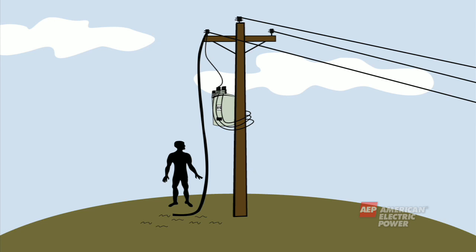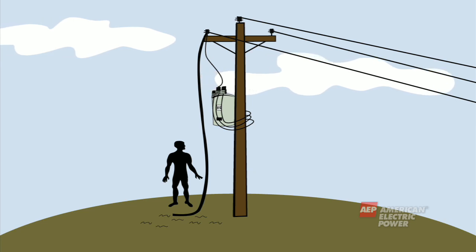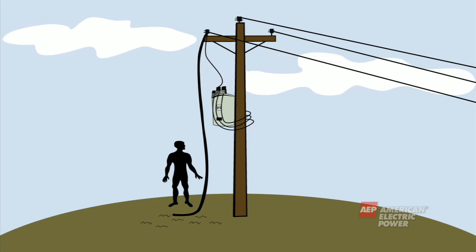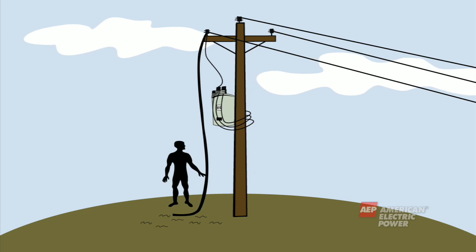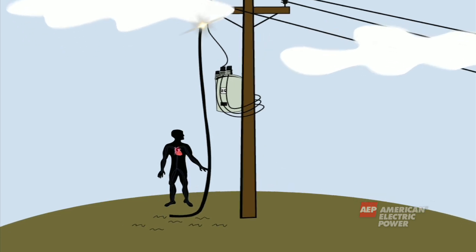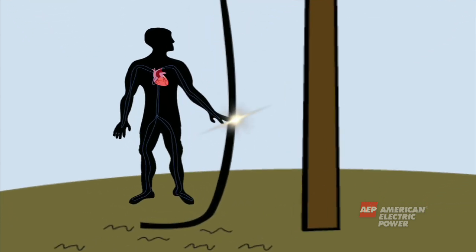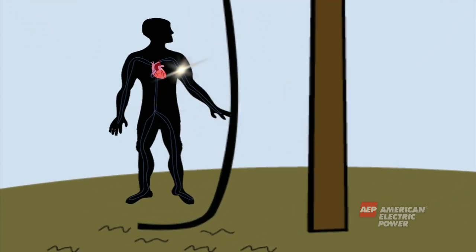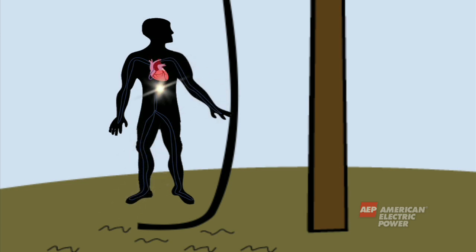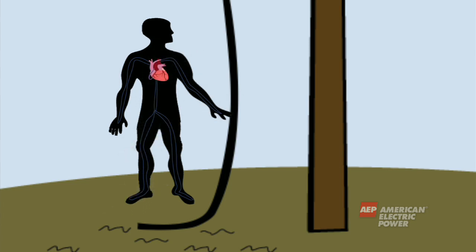The human body is a very good conductor of electricity because it is made mostly of water, which is a conductor. If you were to touch a wire that had electricity running through it, the electricity would use your body as a quick path to the earth. As you can imagine, electricity running through your body can cause severe injury and even death.